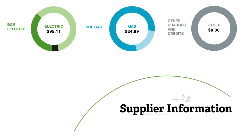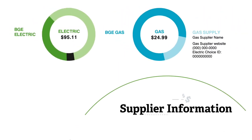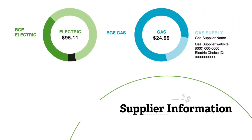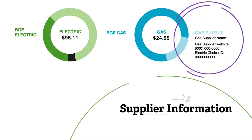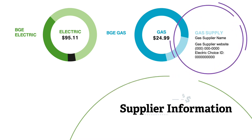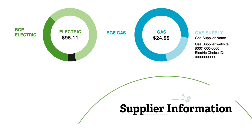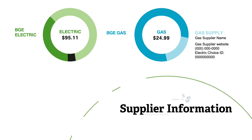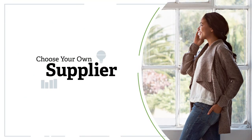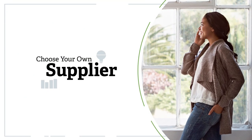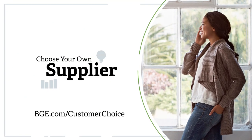If you purchase your energy from a company other than BGE, the supplier name and choice ID number can be found next to the electric and natural gas graphs on your bill. That's because while BGE is responsible for delivery of energy within our service area, you as a customer are able to choose your own supplier.